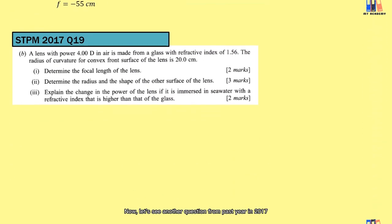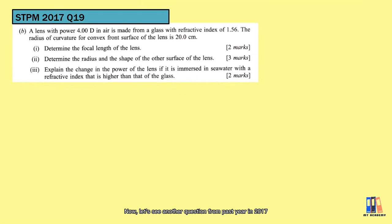Now, let's see another question from past year in 2017. A lens with power of 4.00 diopters is made from a glass with refractive index of 1.56. It is given that one of the surfaces is convex surface with radius of 20cm. Well, the power of the lens is the reciprocal of the focal length measured in meter. Using the formula of P equal to 1 over f, we can get the focal length is 0.5 meter equal to 25cm.